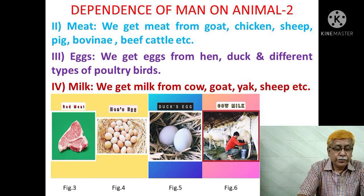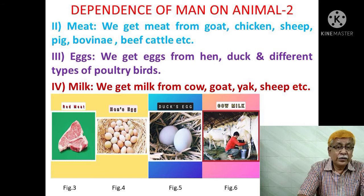Four, milk. We get milk from cow, goat, yak, sheep, etc. Here you have four pictures: figure 3, red meat; figure 4, hen's egg; figure 5, duck's egg; figure 6, cow milk.